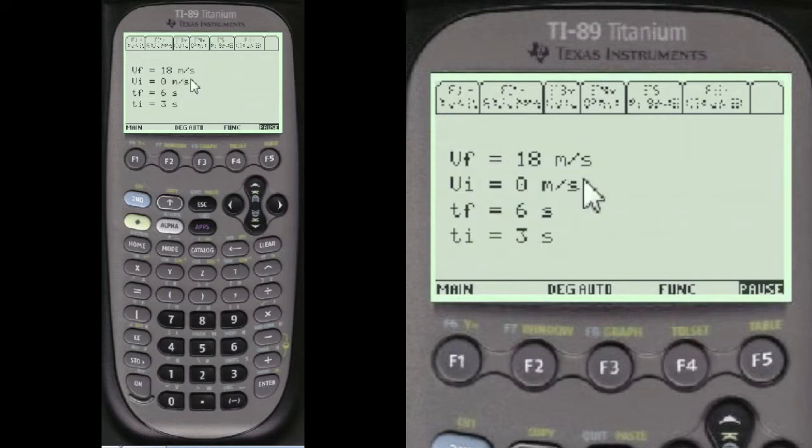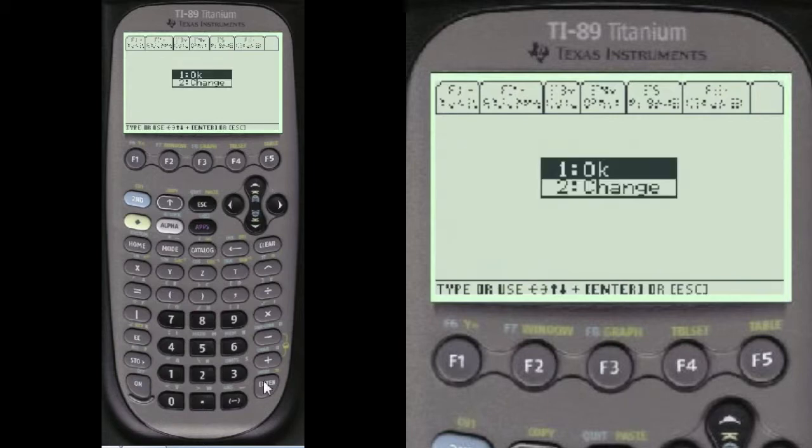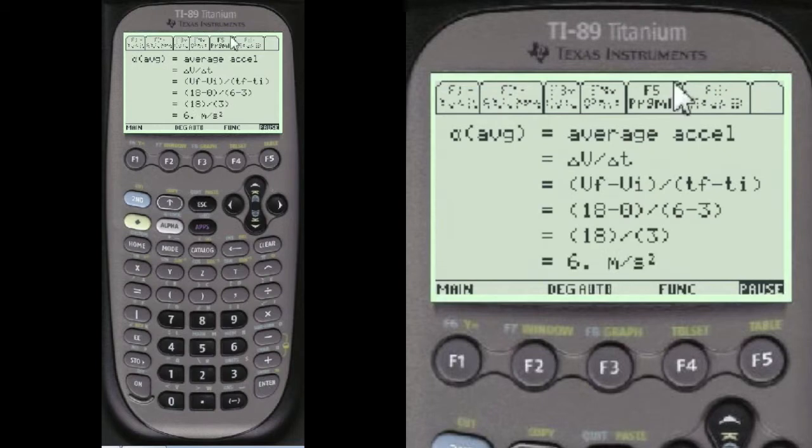And that will show you what you've entered. Now you have final velocity of 18 meters per second, initial velocity of 0, final time is 6 seconds, initial time is 3 seconds. You can change it if you want, but I say it's okay. And the answer is 6 meters per second squared. Notice we took 18 minus 0 and then 6 minus the 3. 18 divided by 3 turns out to be convenient 6.